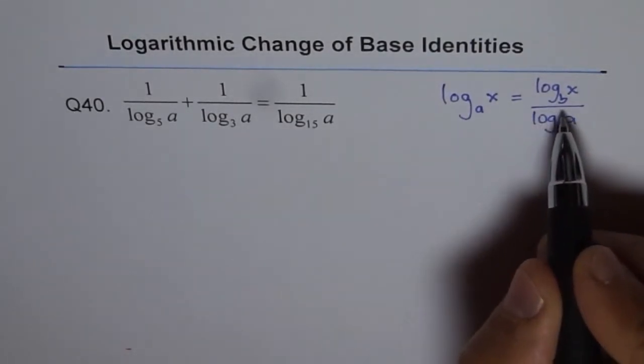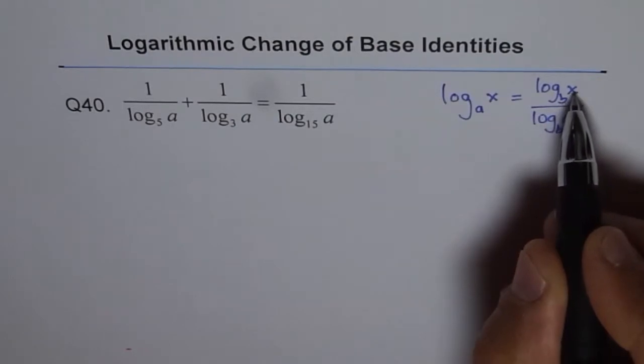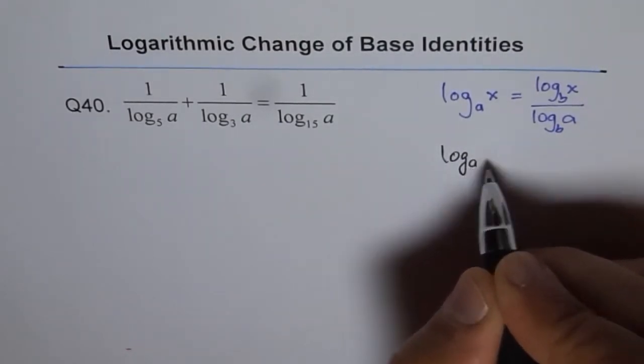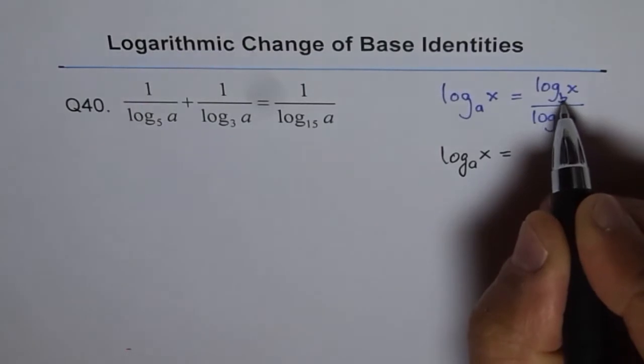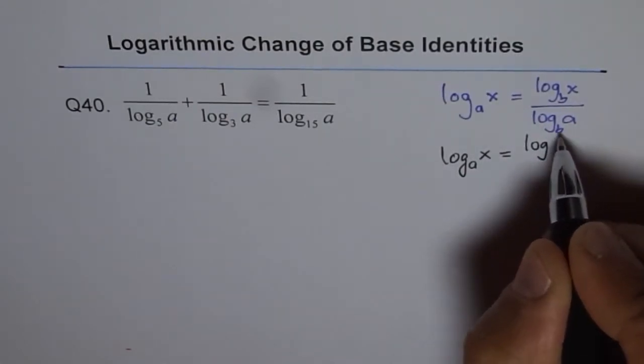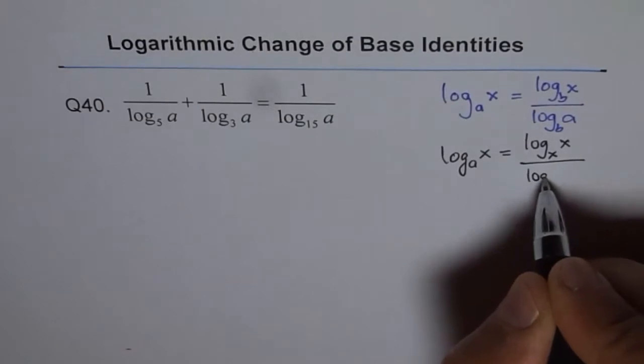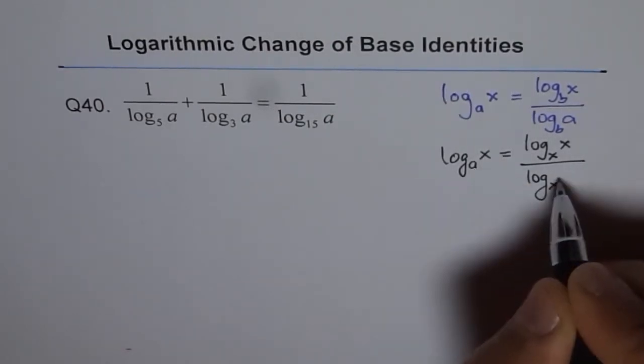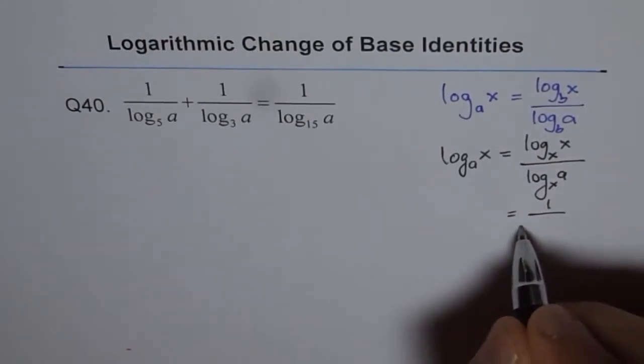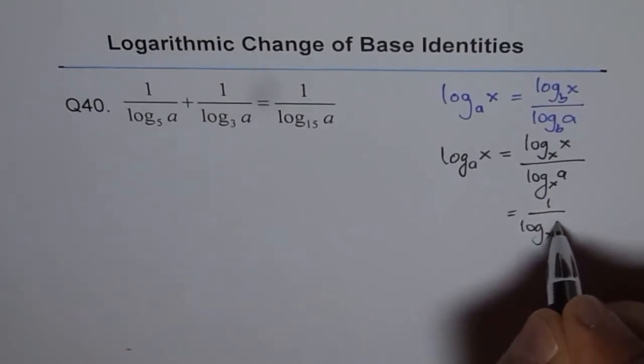If I change my base to x instead of b, then what happens? I can write log_a(x) by replacing b with x in the formula. We get log_x(x) divided by log_x(a). Since log_x(x) equals 1, because x to the power of 1 is x, we get 1 over log_x(a).